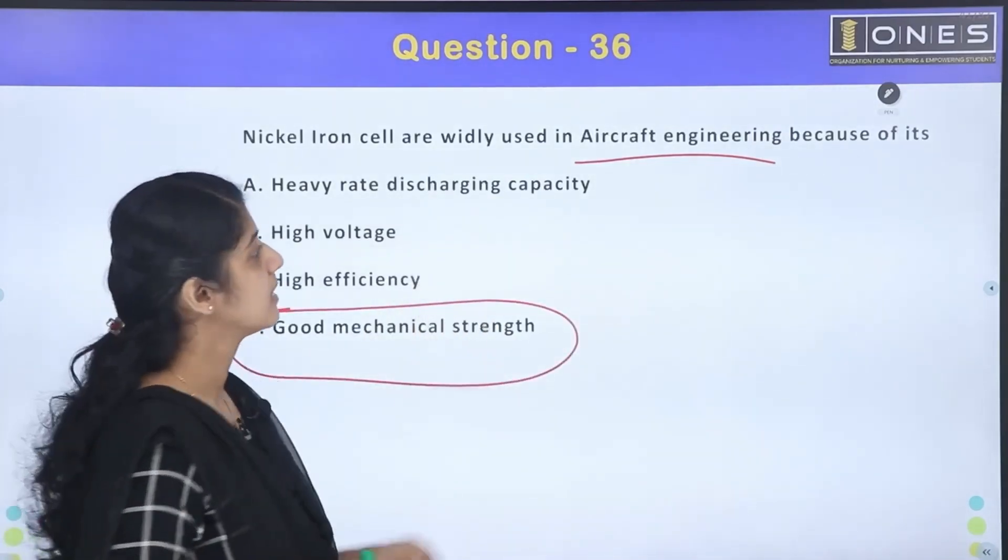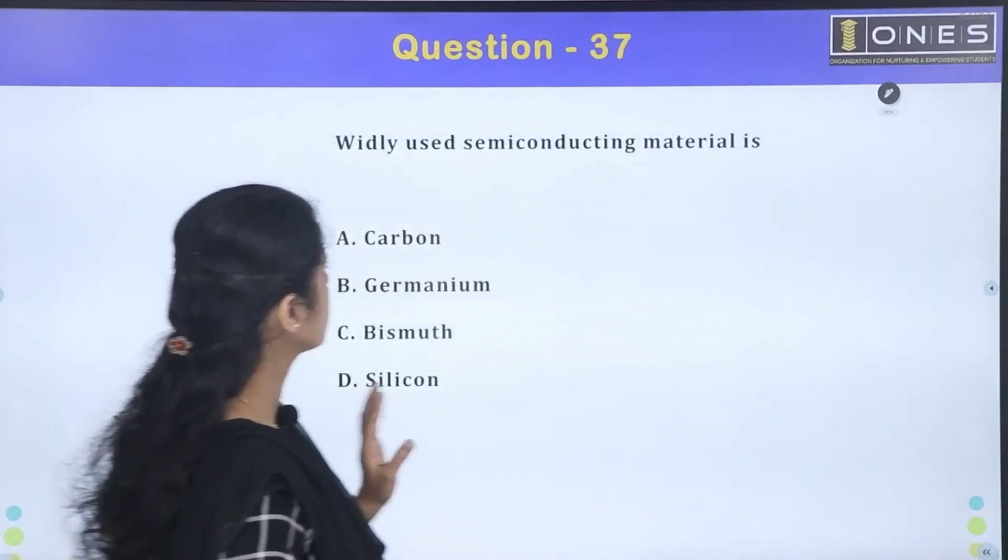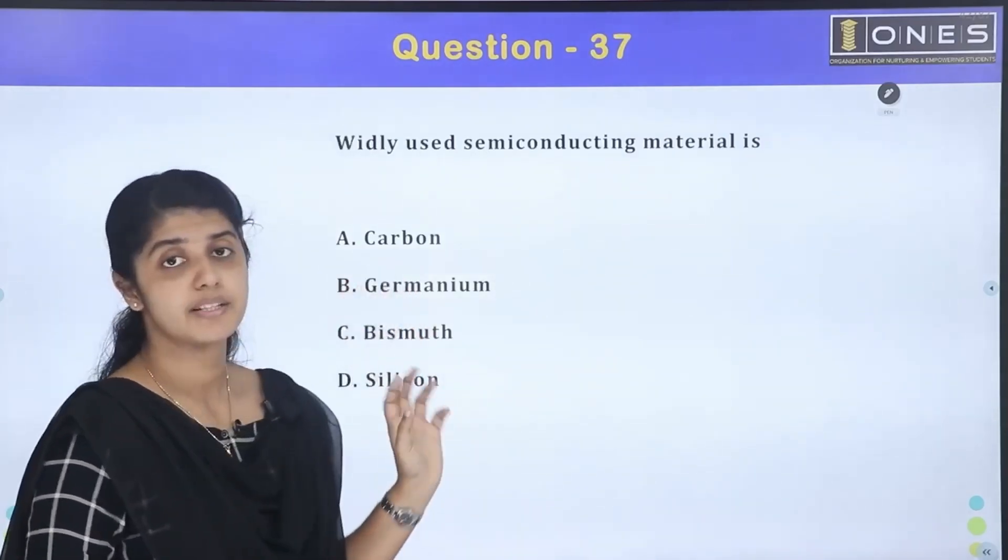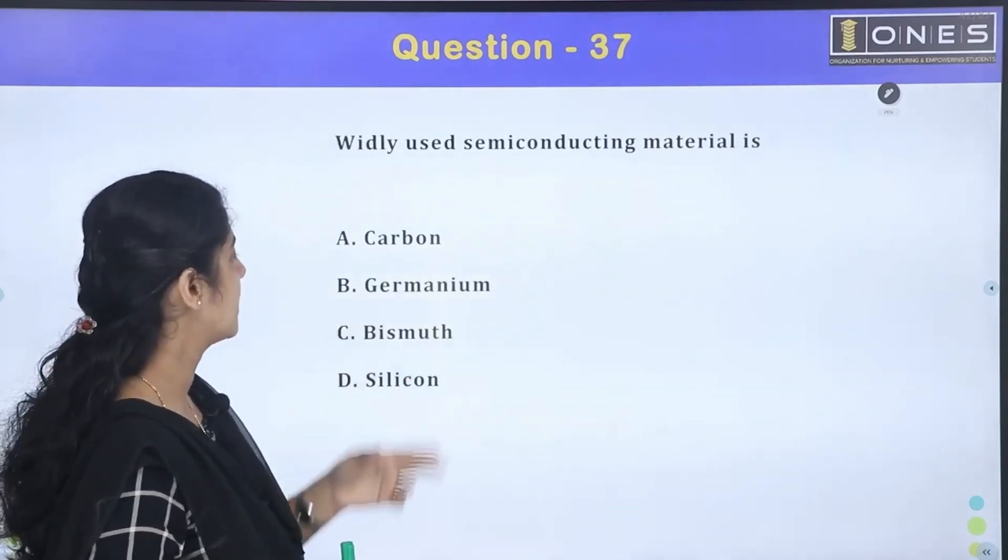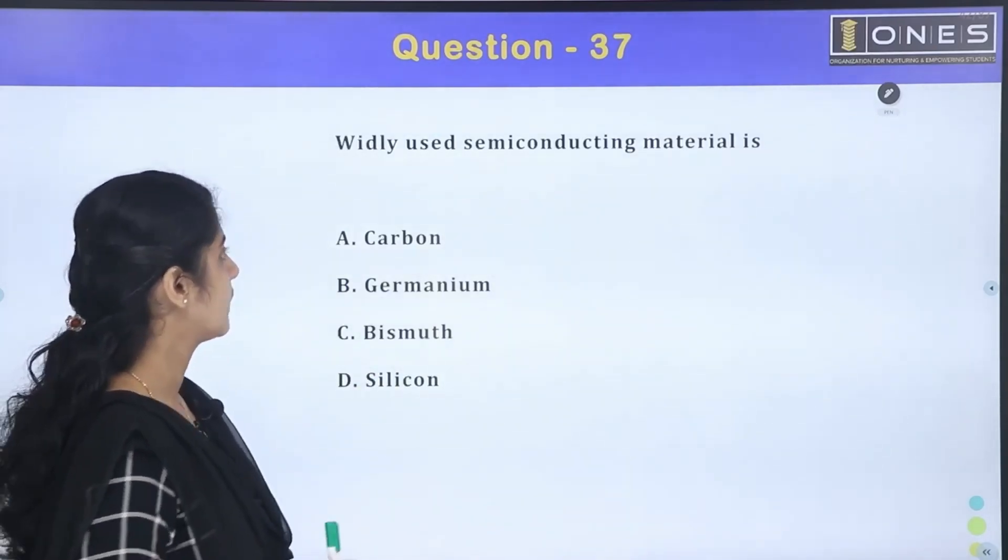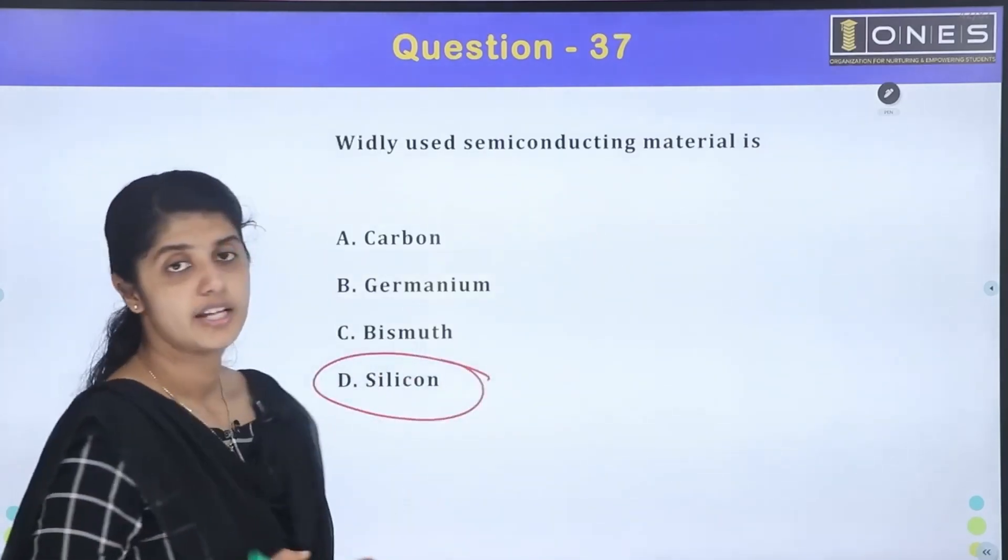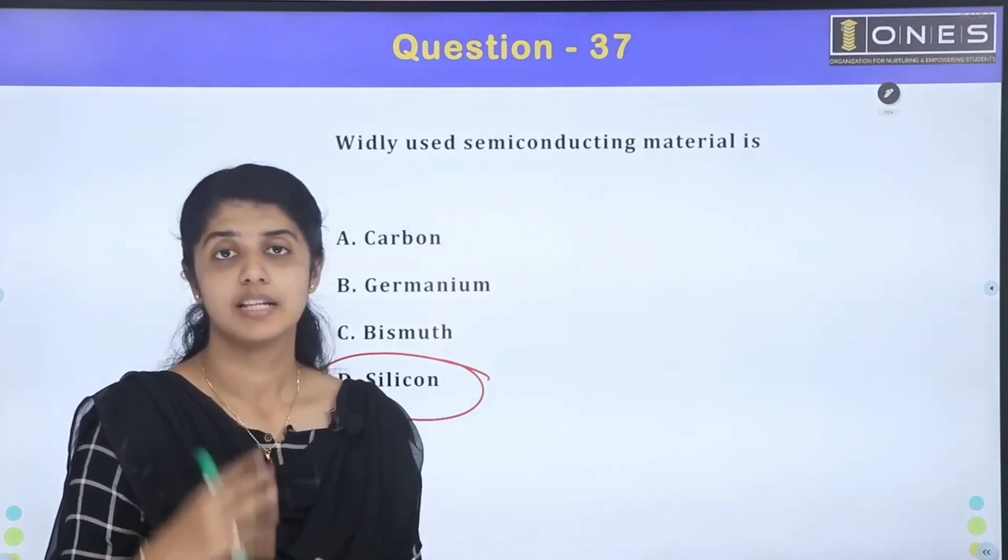The next question: widely used semiconducting material is - the semiconducting materials are carbon, germanium, and silicon. If you use this semiconducting material, what is silicon? Silicon is easily available.